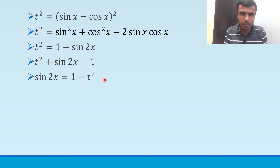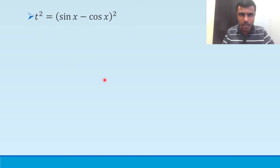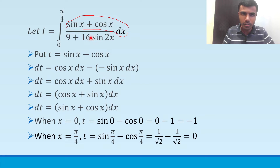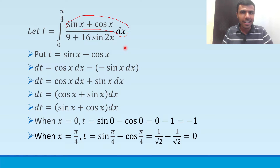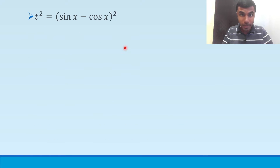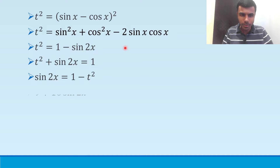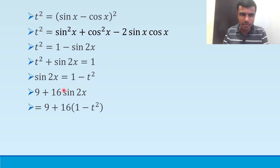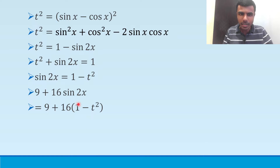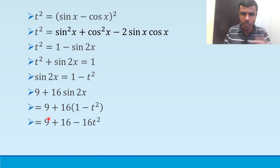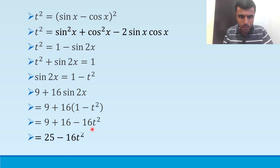Now my target is to find 9 + 16 sin 2x. Substituting sin 2x = 1 - t²: 9 + 16(1 - t²) = 9 + 16 - 16t² = 25 - 16t².